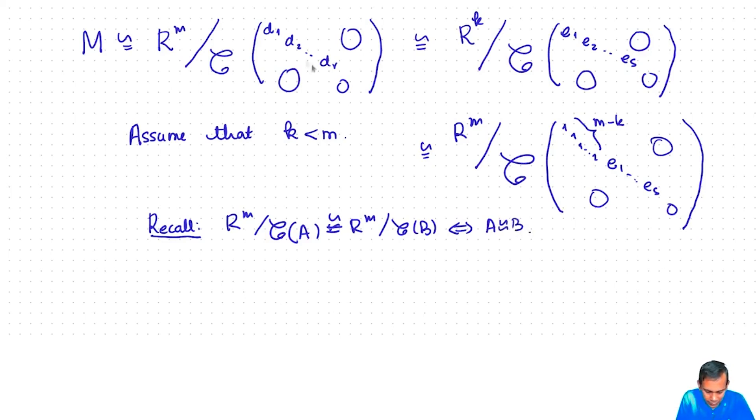But we have already shown that R^m mod column space of A is isomorphic to R^m mod column space of B if and only if A is equivalent to B. That would mean that this matrix d1, d2, dr is equivalent to this matrix with a bunch of ones and then e1, e2, es. But by the uniqueness of Smith canonical form, this means that these two matrices are actually equal. And since we have assumed that d1 is a proper ideal of R, d1 is not a unit, this implies that m minus k is zero. So m is equal to k, and moreover by the uniqueness of Smith canonical form, it follows that r equals s and di equals ei for all i.